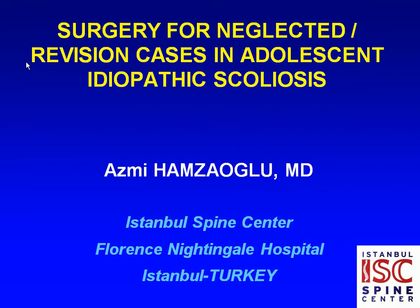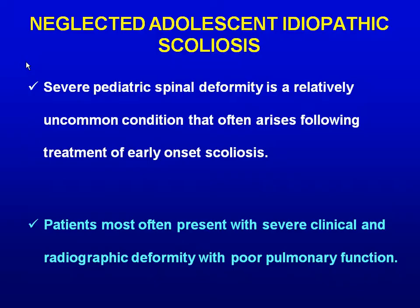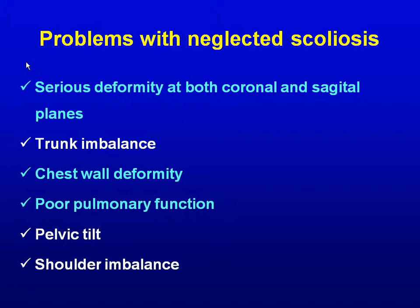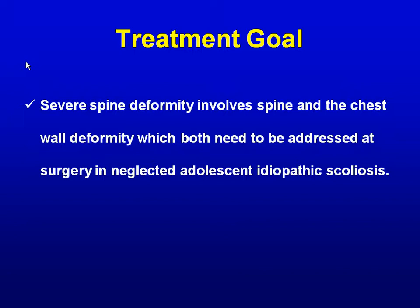Neglected adolescent idiopathic scoliosis and revision surgery. Patients with neglected adolescent idiopathic scoliosis most often present with severe clinical and radiographic deformity with poor pulmonary function. Problems with neglected scoliosis include serious deformity in both the coronal and sagittal planes, chest wall deformity, and poor pulmonary function. Severe spine deformity involves both spine and chest wall deformity, which both need to be addressed at surgery.